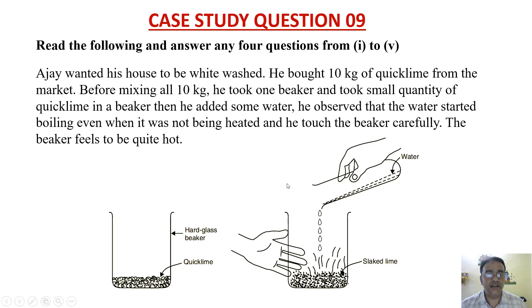Read the following and answer any four questions from one to five. Ajay wanted his house to be whitewashed. He bought 10 kilogram of quicklime from the market. Before mixing all 10 kilogram, he took one beaker and took small quantity of quicklime in a beaker, then he added some water. He observed that the water started boiling even when it was not being heated and he touched the beaker carefully.